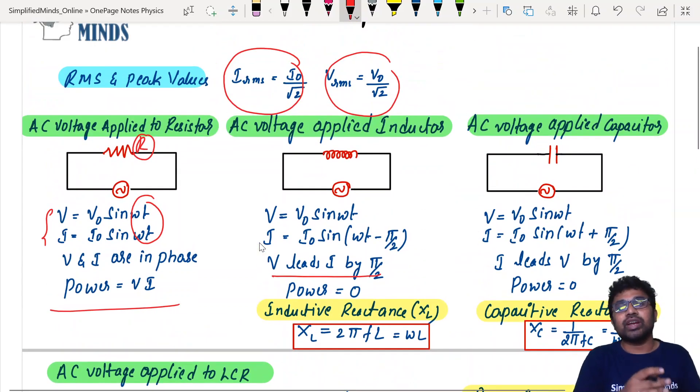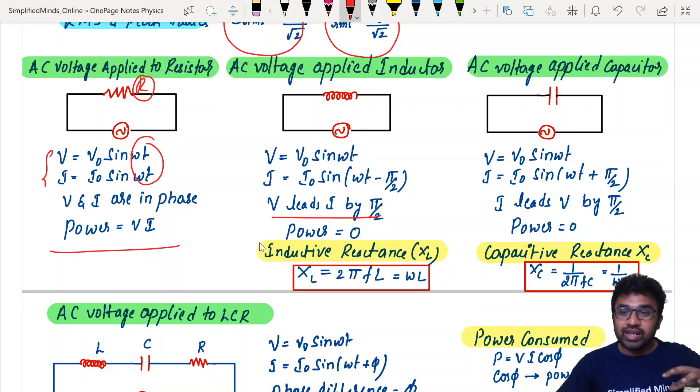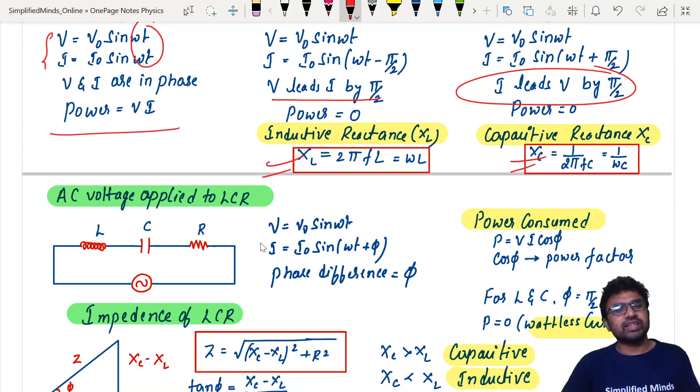Similarly, coming to AC voltage applied to capacitor. V is equal to V0 sin omega t. I is equal to I0 sin omega t plus pi by 2. So I leads voltage by pi by 2. And again, these formulas. XC is equal to 1 by omega C or 1 by 2 pi FC. This formula is very important because most of the questions at JEE level, there are almost no derivations, only formulas.